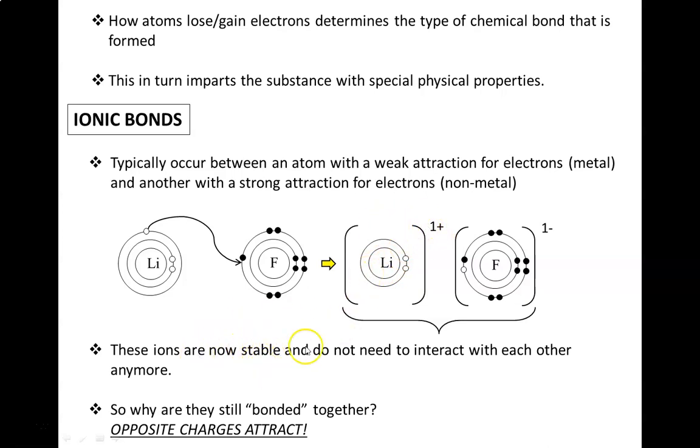Now that these two ions are stable, they do not need each other for stability anymore. So why are they still bonded together? That's because opposites attract. The opposite charges, the electrostatic attraction between these two ions, keeps them held together. We call this attraction an ionic bond because it's a bond between two oppositely charged ions.